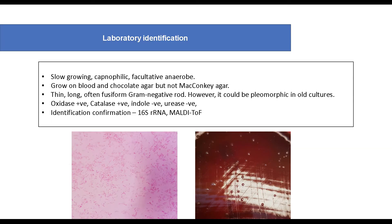For laboratory identification: Capnocytophaga is a slow-growing organism and may take days to grow on culture media. It is a facultative anaerobe and capnophilic. It can grow on blood and chocolate agar but may not grow on MacConkey agar. On gram stain, they appear as thin, long, fusiform gram-negative rods, but on older culture may appear pleomorphic. It is oxidase and catalase positive, but urease and indole negative. Identification can be confirmed using MALDI-TOF or 16S rRNA sequencing.